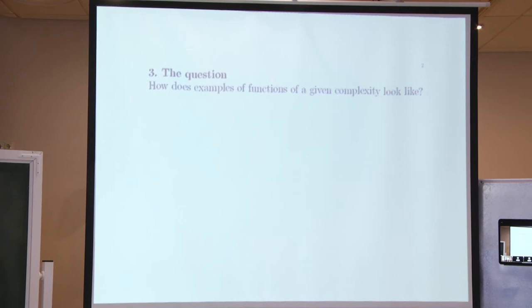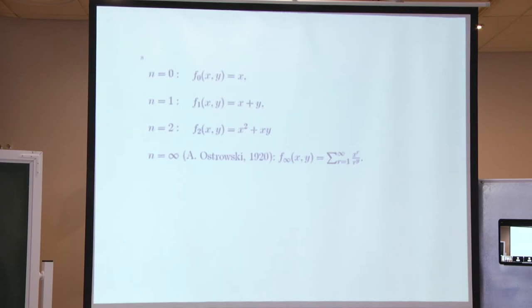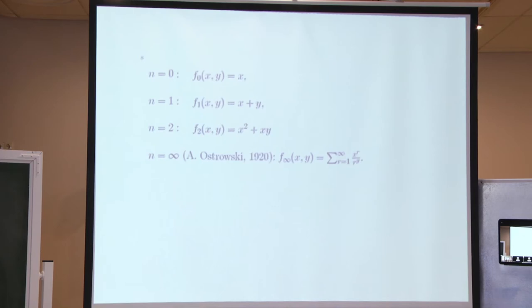Our main question is: how do examples of functions of a given complexity look like? To the best of my knowledge, explicit examples for an arbitrary n were not constructed, except for the following four cases: complexity 0, complexity 1, complexity 2, and infinity. The first examples are completely clear — an example of a function of one variable — and x plus y is the simplest example of a function of complexity 2.